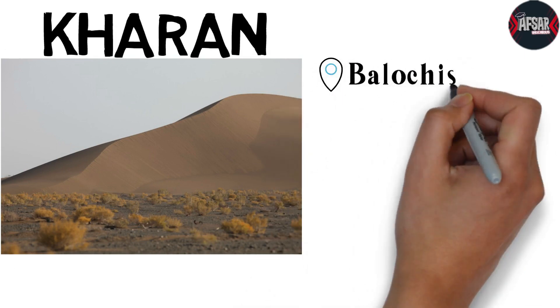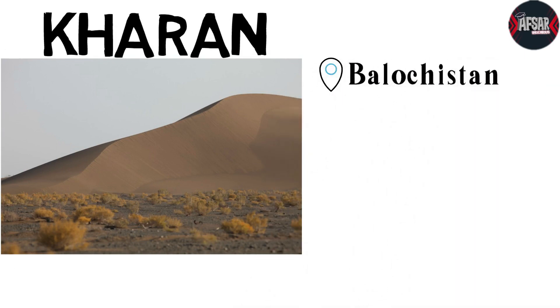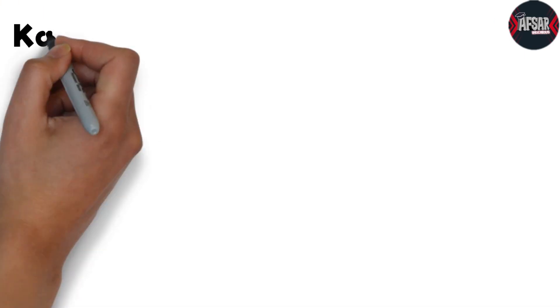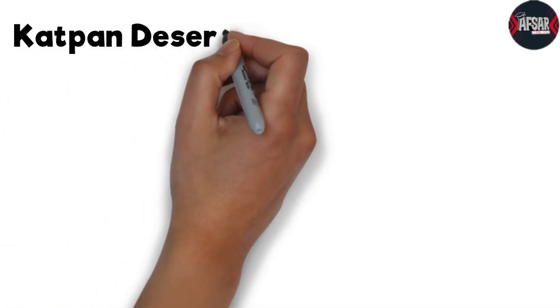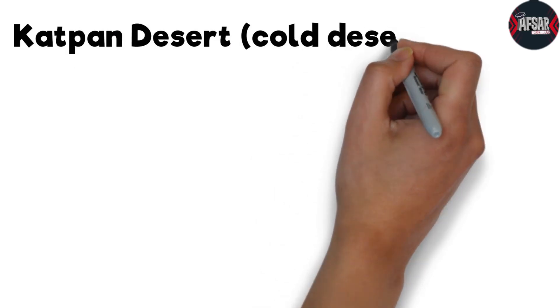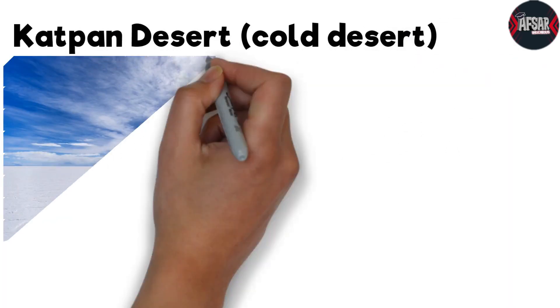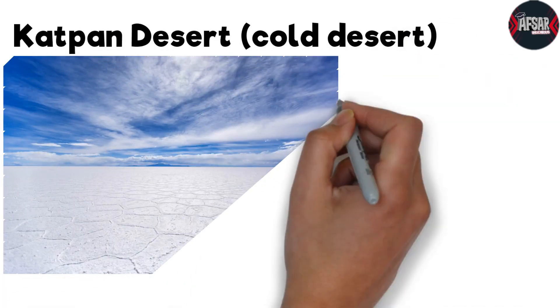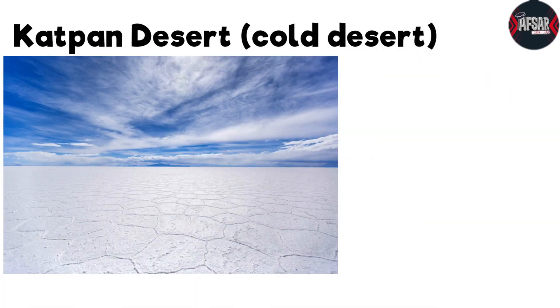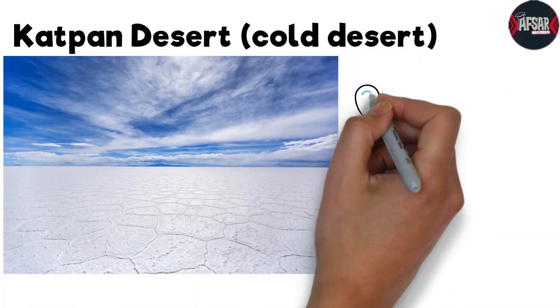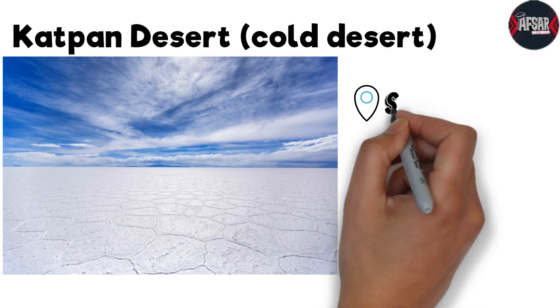The fourth desert is the Kharan desert, which is located in Balochistan. The fifth is the Kattpan desert, located in Skardu. The Kattpan desert is a cold desert.